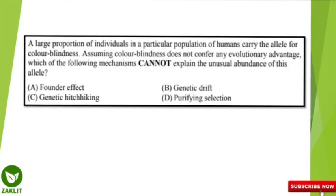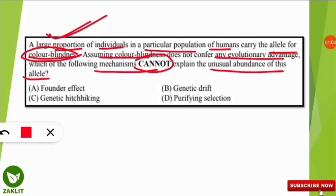Let us start with the question. This question is taken from previous Gate ecology and evolution papers. A large population of individuals carry the allele for color blindness. Assuming color blindness does not confer any evolutionary advantage, which of the following mechanisms cannot explain the unusual abundance of this allele? Color blindness is generally due to a recessive allele, and the question asks which mechanism cannot be responsible.